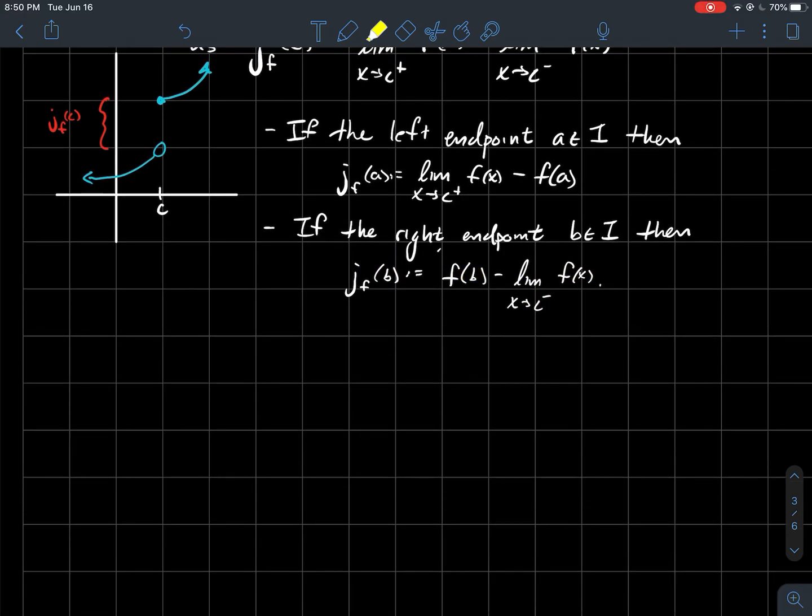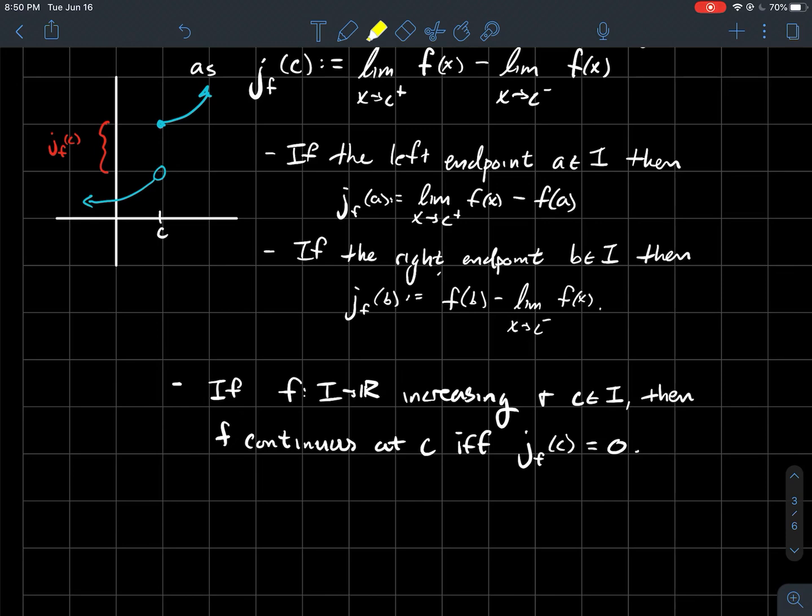All right, so the next thing I want to say is, well, a function that's increasing, such that c is in that interval, then a function's continuous at c if and only if the jump at c should be zero. And so if you think about this, what if the jump from here to here is zero? Then there's no space here, there's no gap. Then this point is actually right there. So in other words, you don't have to pick up your pencil in order to draw the graph. There's no jump. So again, being continuous at a point is equivalent to saying that the value of the jump at c is equal to zero.